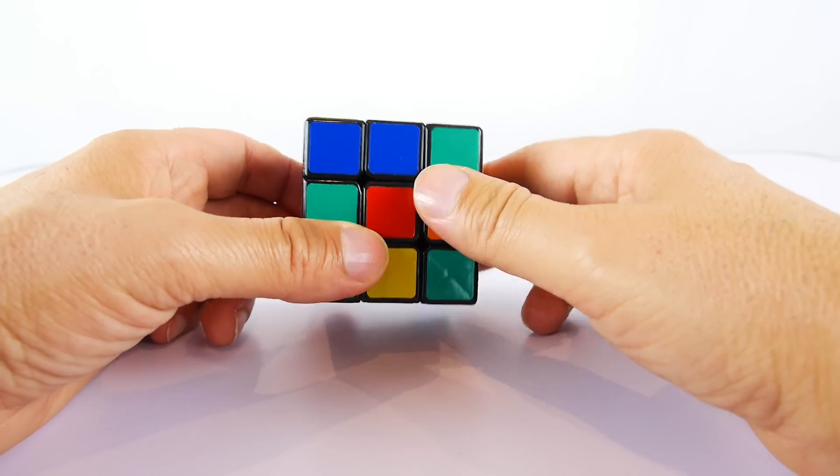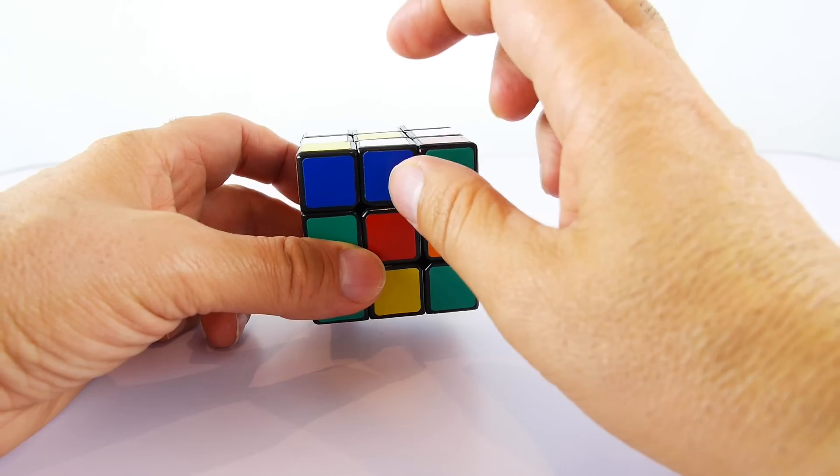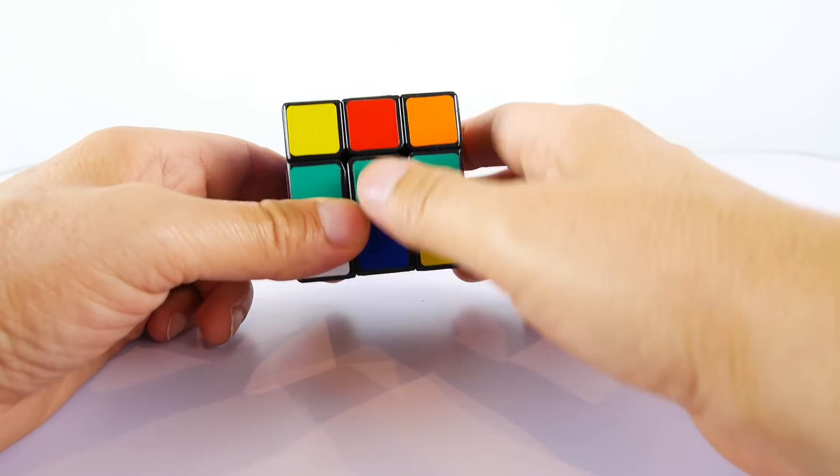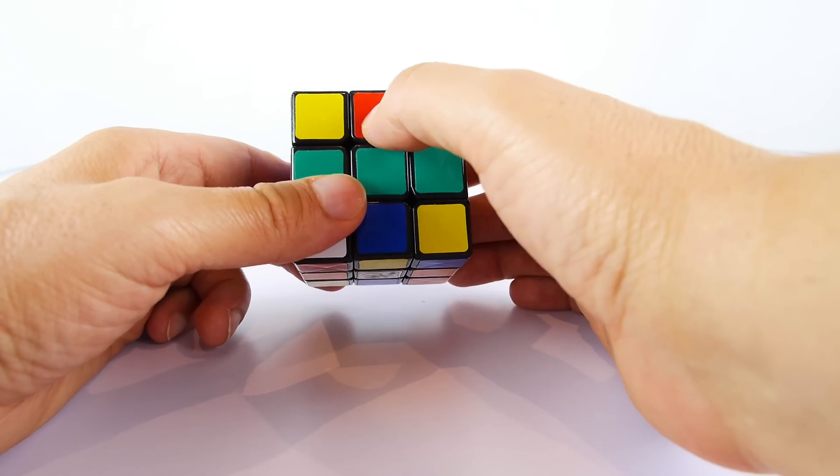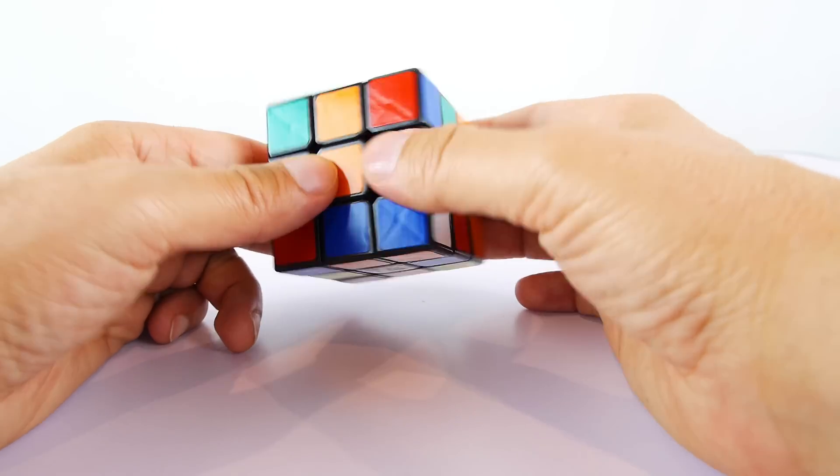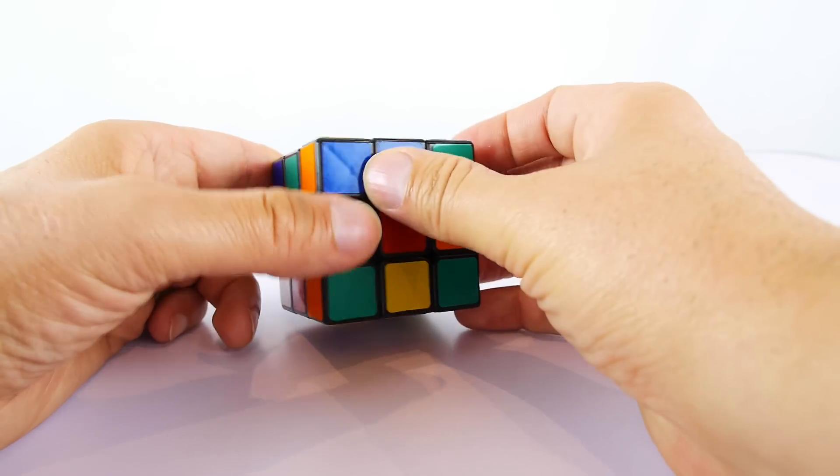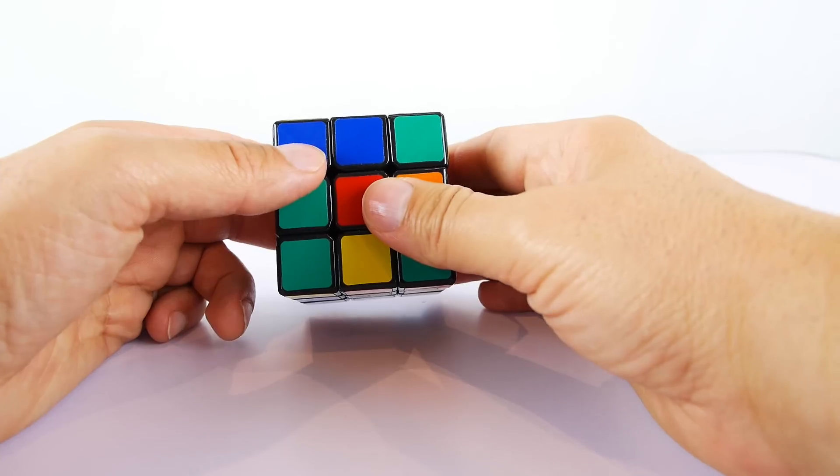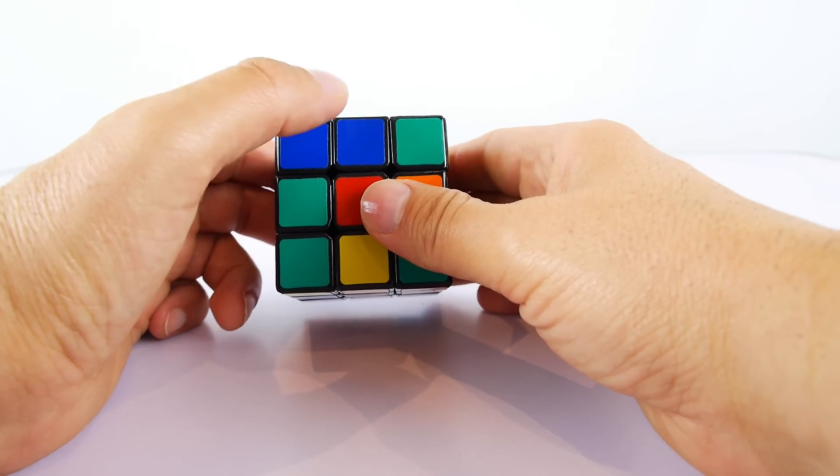What I want you to do is have a look at all the white squares that we've created. They all will have a color here. This one's got red, this one's got orange, this one's got green, and that's got blue. Now what we need to do is line up these colors with their corresponding color.